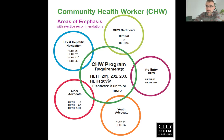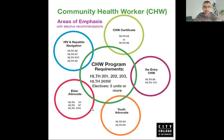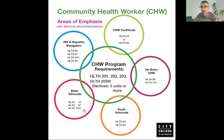Moving down to the youth advocate, we have Health 64 (health education trainings) and Health 65 (youth development and leadership). Over to elder advocacy, we have Health 10 (health and aging), which has several sections every semester; Health 87 (assessment and services for older adults), a three-unit class that has had some enrollment challenges; and the one-unit Health 91H, elder abuse prevention.